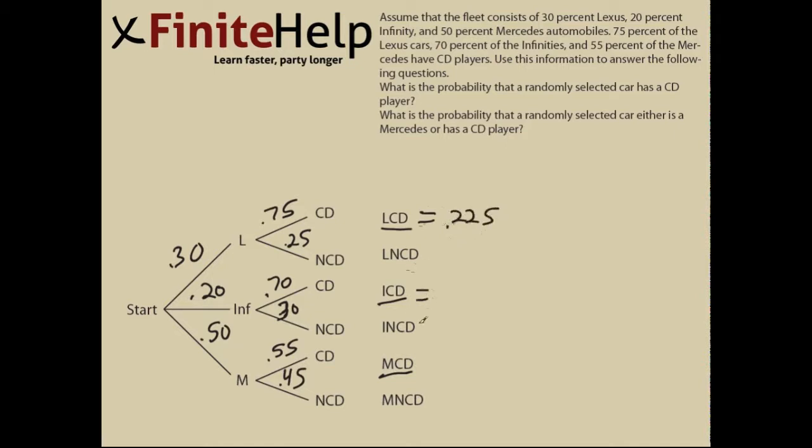For Infinity, we do the same thing: the probability of it being an Infinity times the probability of it having a CD player, which is 0.14. For Mercedes, 0.50 times 0.55 equals 0.275.